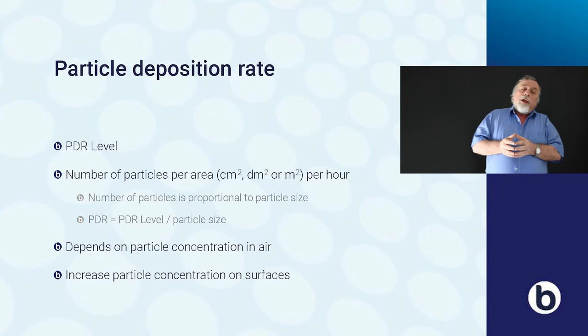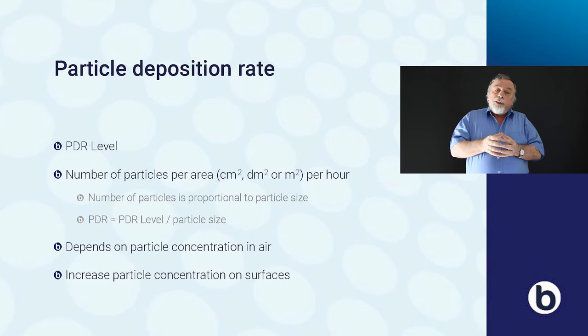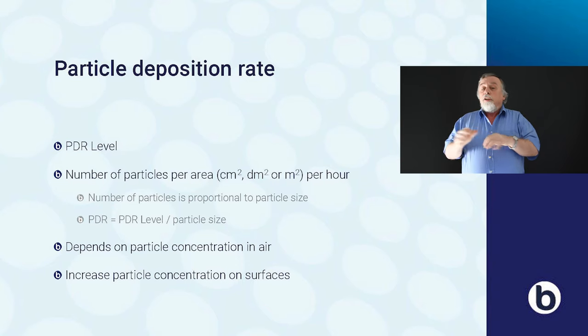Particle deposition depends on the particle concentration in air. Particle deposition will also cause an increase of particles on surfaces and by that have an impact on surface cleanliness. Particle deposition rate is the product of particle concentration in air times the deposition velocity. So you can say that particle deposition rate equals the concentration of particles times the particle deposition velocity, and it is also equal to the change of surface cleanliness divided by time.